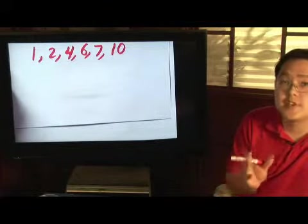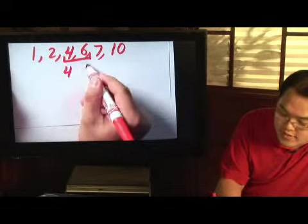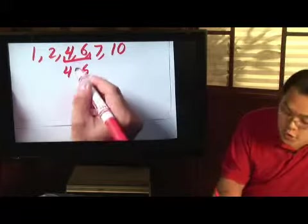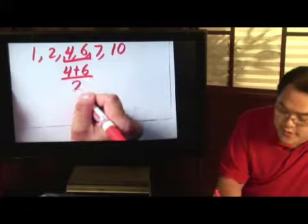Whenever you have an even number of figures, then you take the middle two, you take the 4, you take the 6, and then you find the average. In other words, you add the two, and then divide by two.